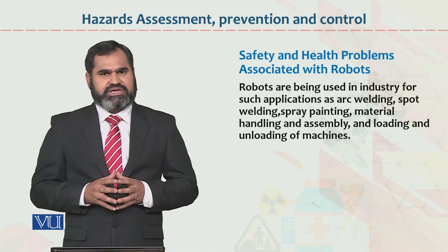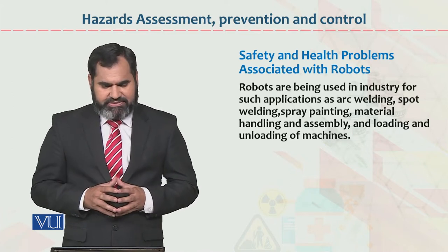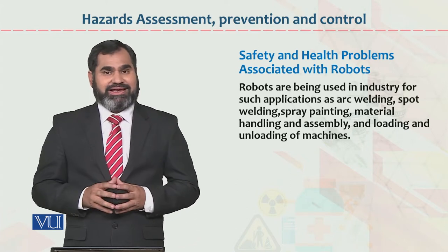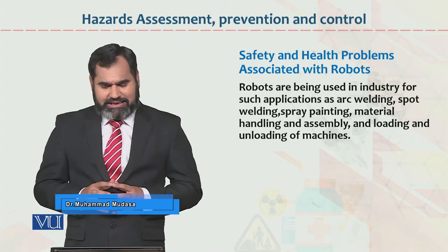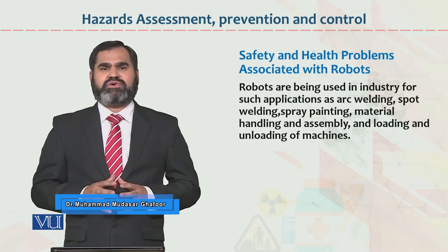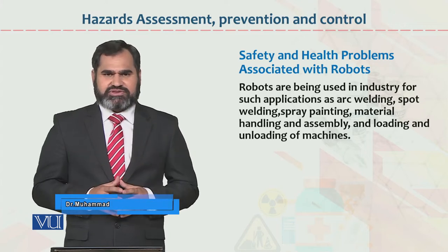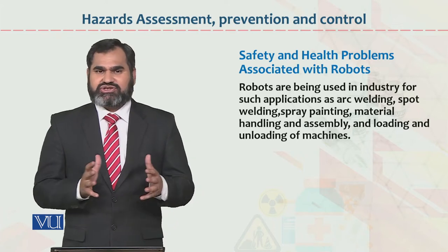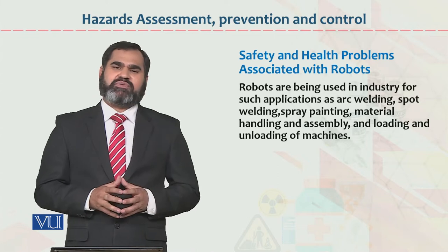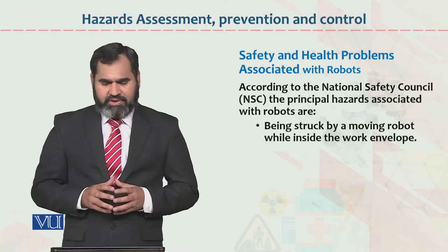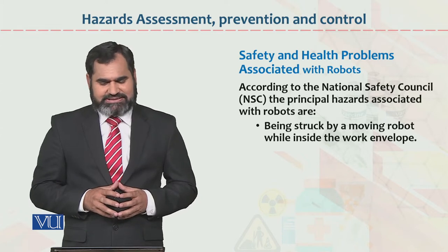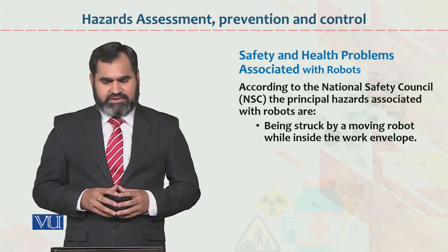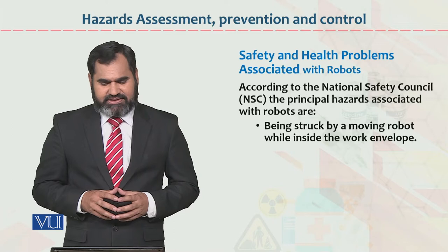Robots are being used in industry for such applications as arc welding, spot welding, spray painting, material handling and assembling, and loading and unloading of machines. In sab cheezon ko clean, neat and clean rakhna hai to us ke liye definitely you need some sort of humans, workers, employees. According to National Safety Council (NSC), the principal hazards associated with robots are: number one, being struck by a moving robot while inside the work envelope.